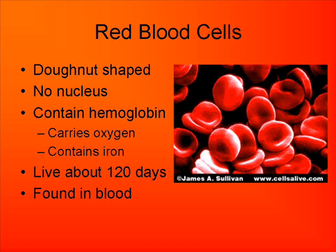Red blood cells live about 120 days and are produced throughout your body. If you remember back to when we talked about the skeletal system, red blood cells are produced in your red bone marrow.